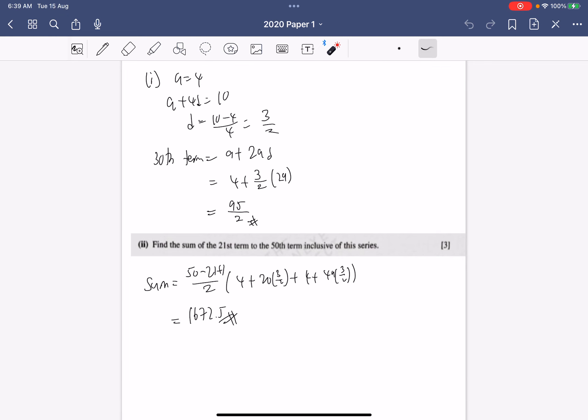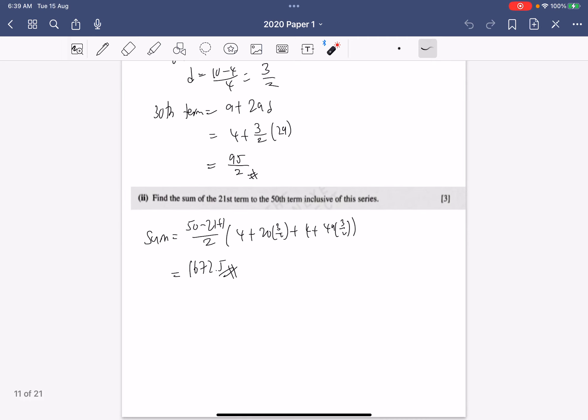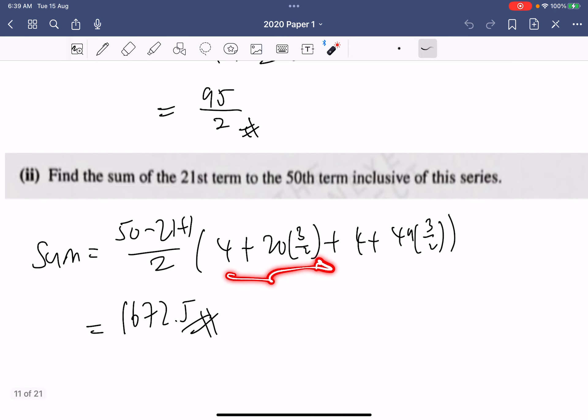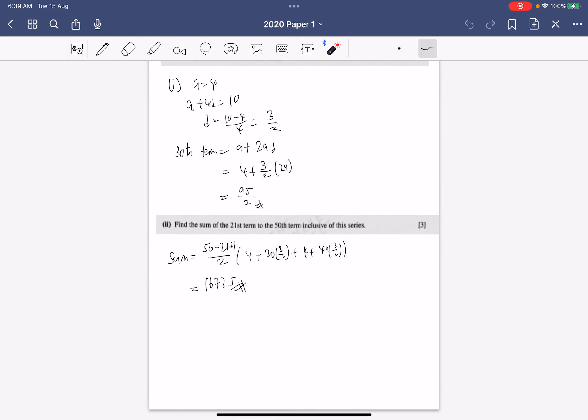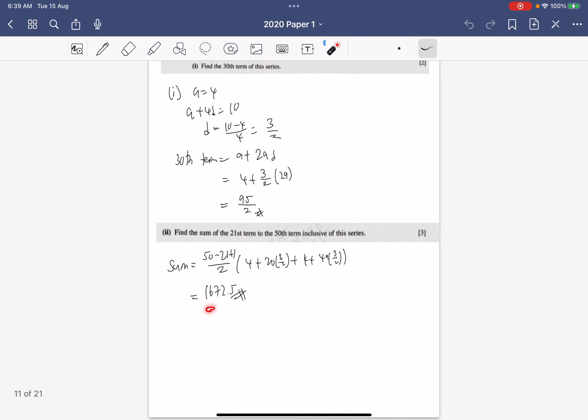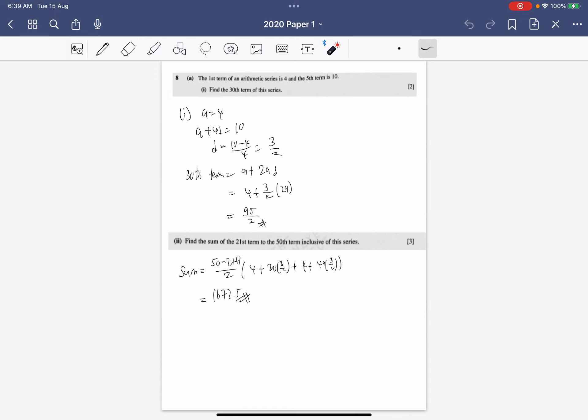The next part, we are supposed to find the sum of the 21st term to the 50th term in this series. So the way to do this, we can just take 50 minus 21 plus 1, so this number of terms divided by 2, so it's n over 2. Then the first term is the 21st term and the last term is the 50th term. So the 21st term is 4 plus 20 times 3 over 2, and the 50th term is 4 plus 49 times 3 over 2. What I'm using is the arithmetic series formula n over 2 times first term plus last term. So in the end we get 1672.5, that should be the answer.